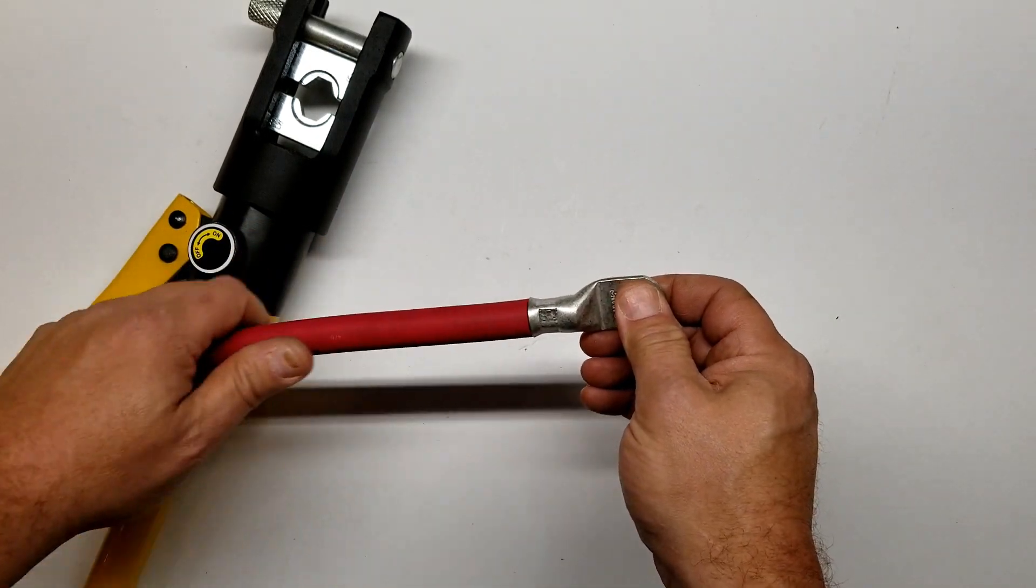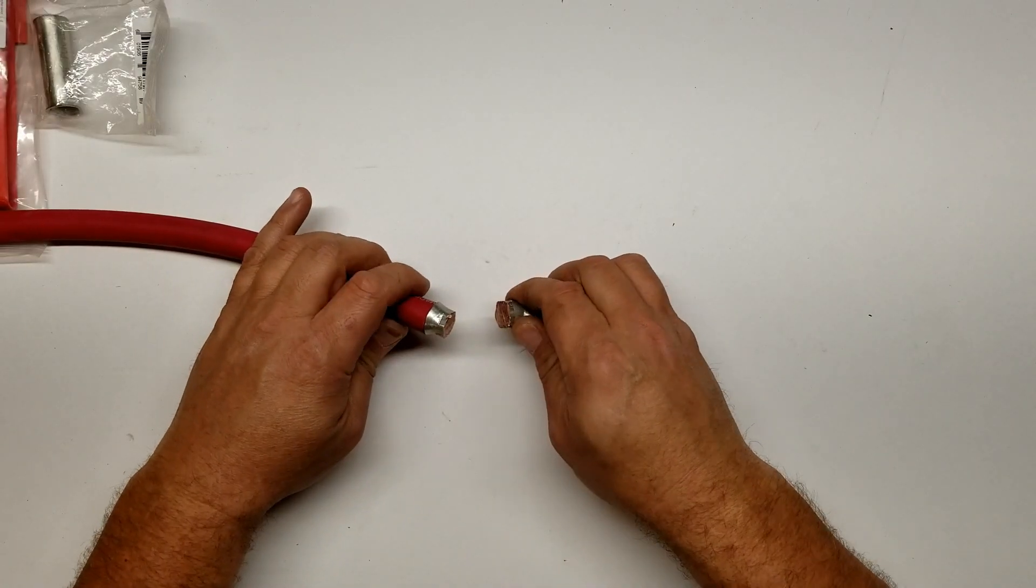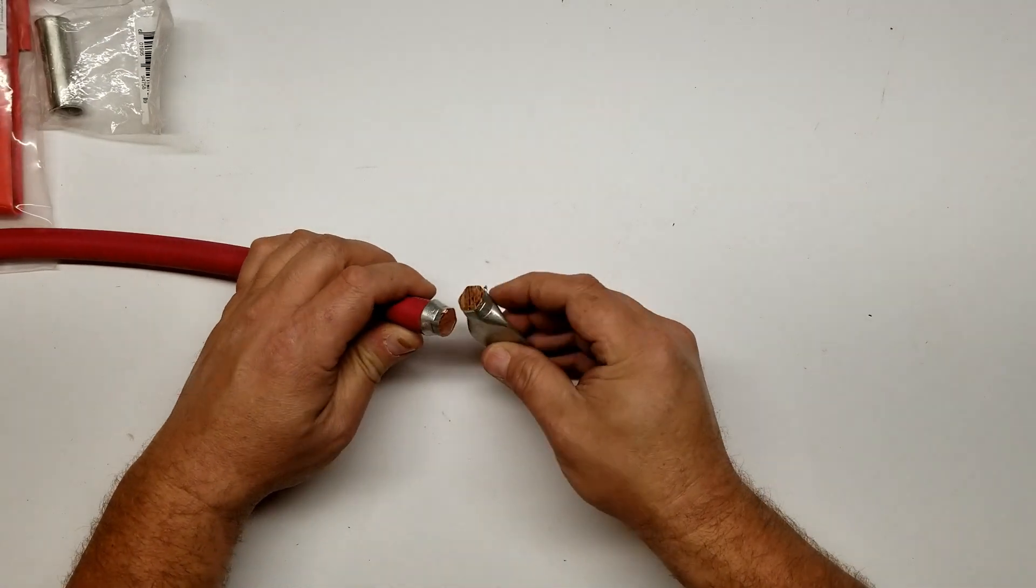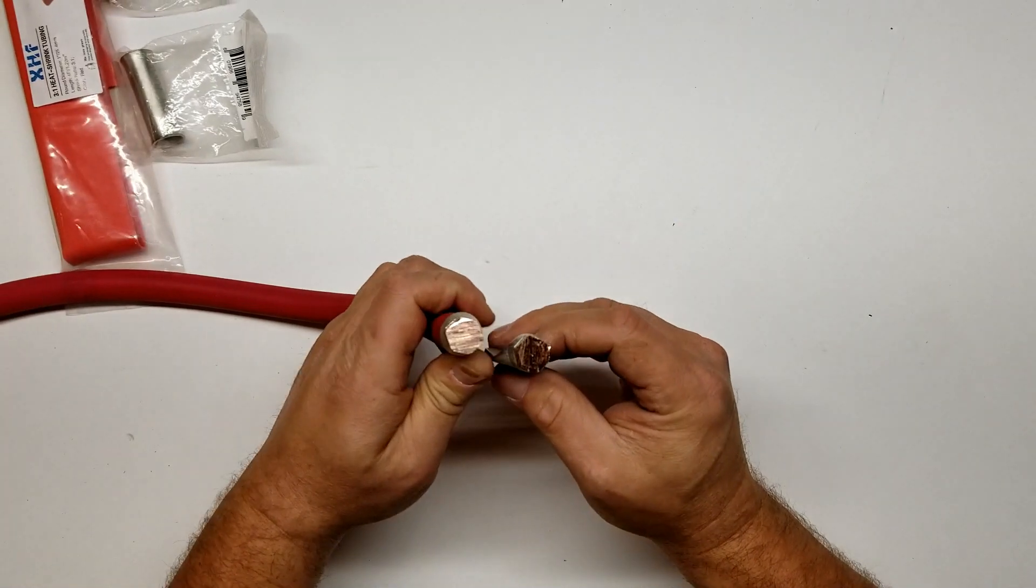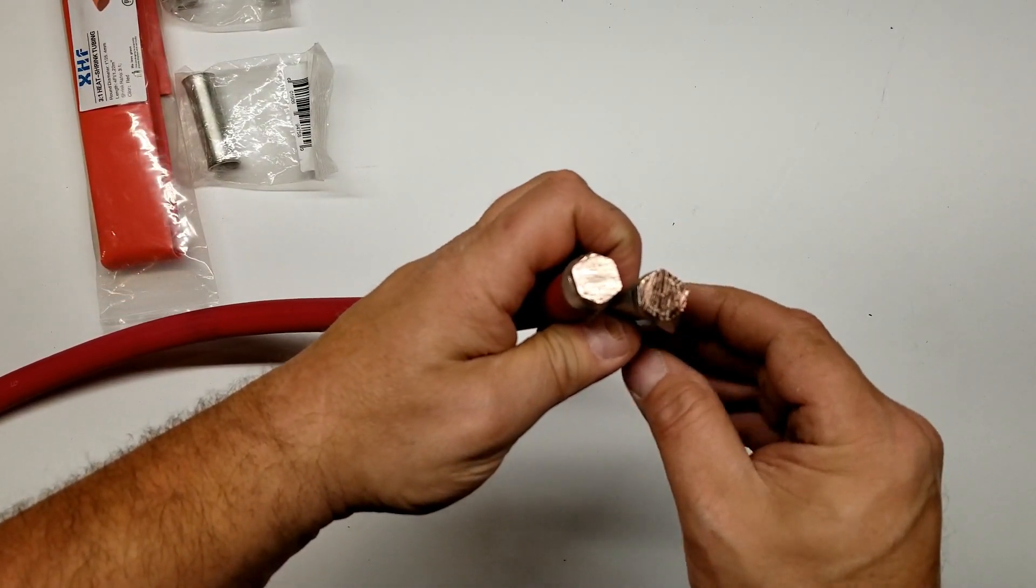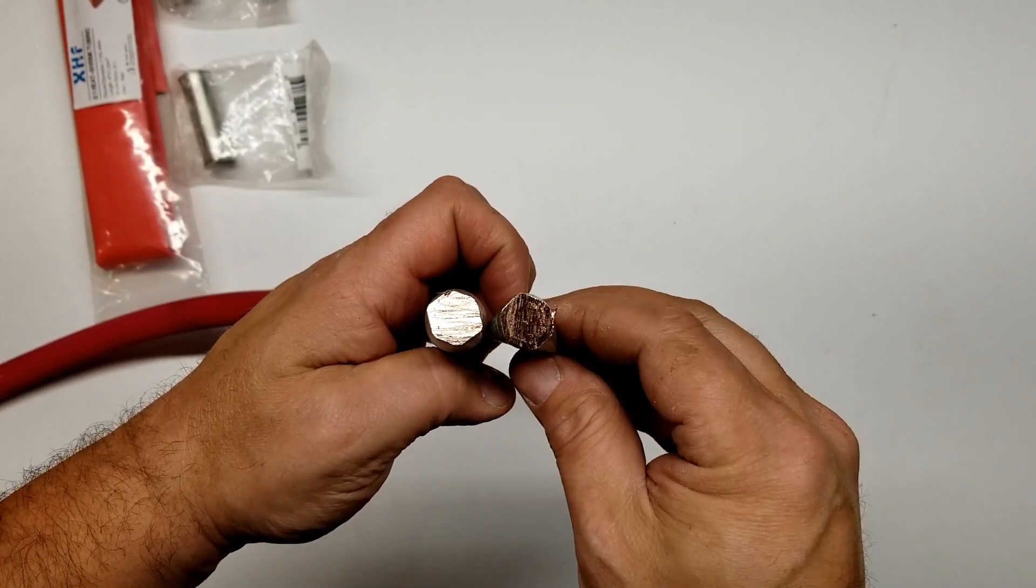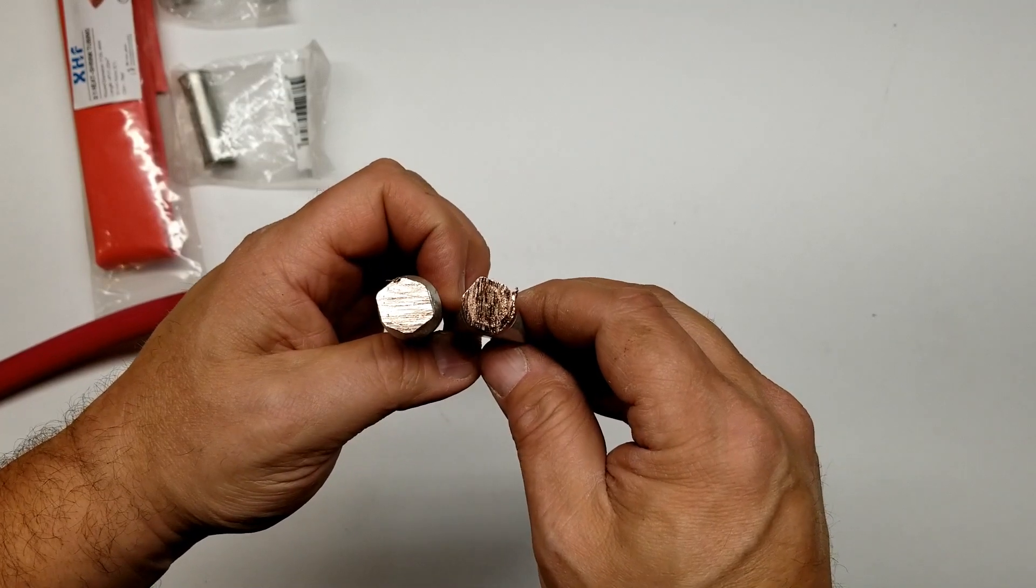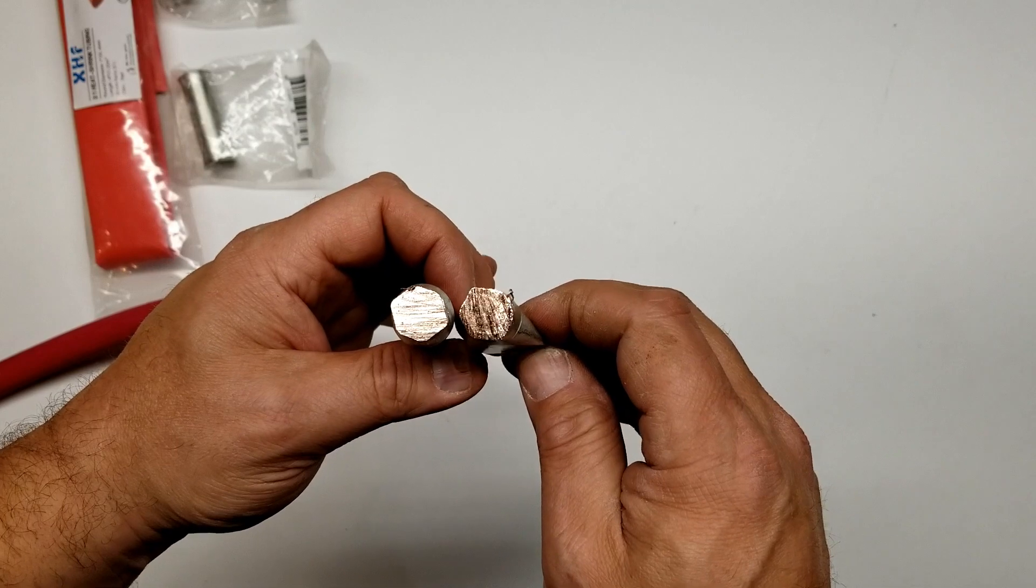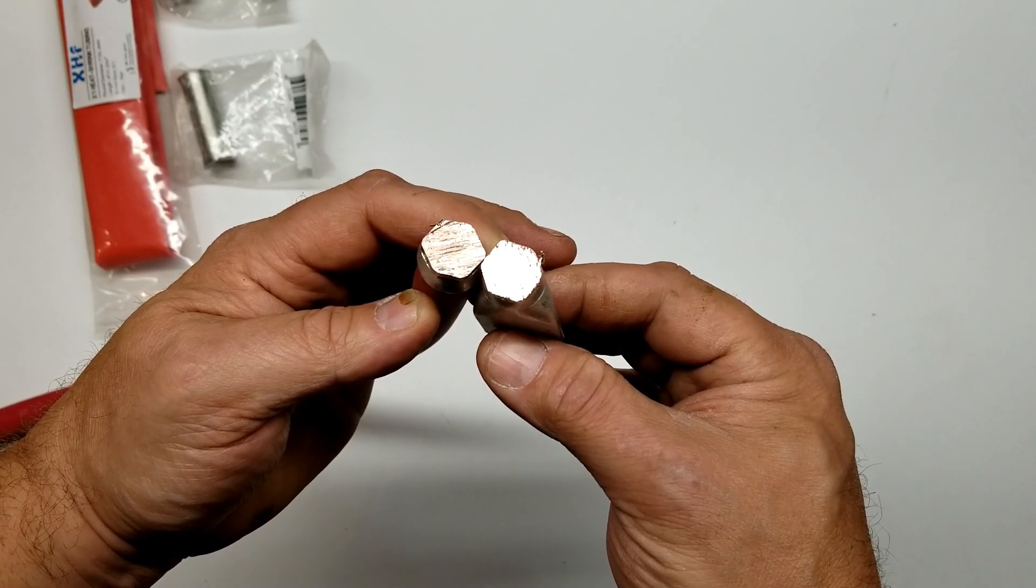I will cut this apart just so we know how it looks on the inside, see how good a connection we got. All right guys, I'm back from the saw. I don't have a bandsaw here at the moment so I just used a sawzall. I would say that's a decent crimp - it pretty much turned it into solid copper. Not too bad. I'd say that makes a good connection. Then I would normally put some heat shrink tubing over this, which I will do next.